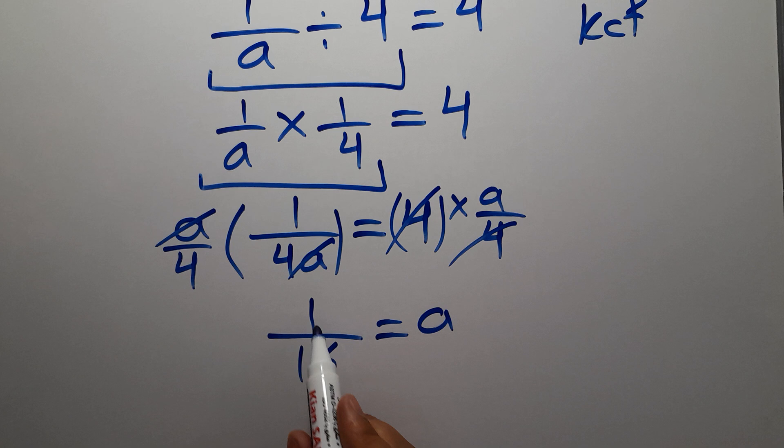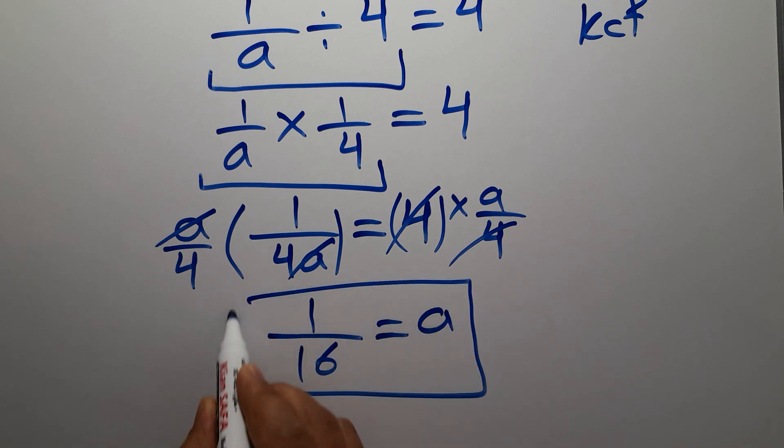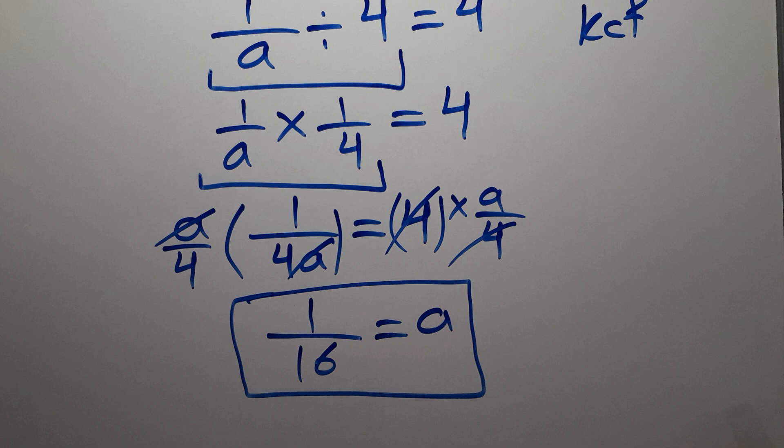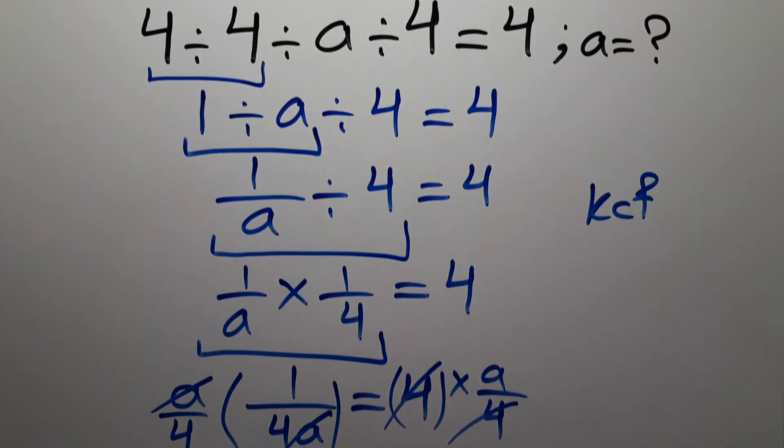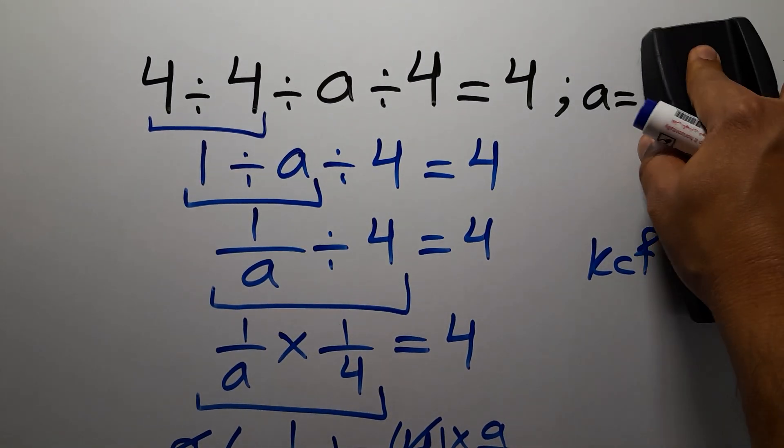So a is equal to 1 over 16, and this is our final value for a. Thank you.